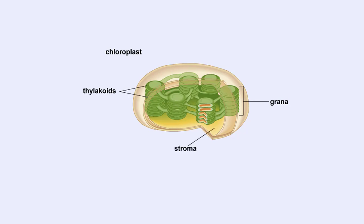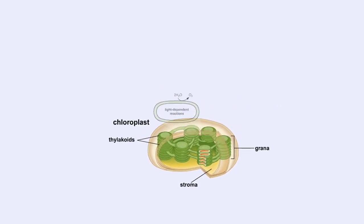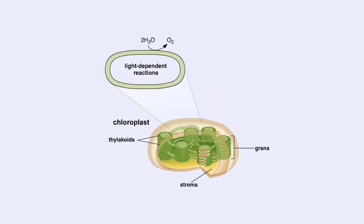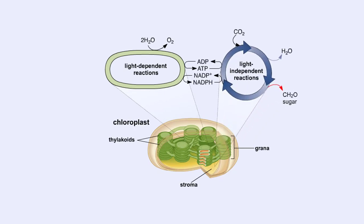All the biochemical reactions of photosynthesis take place in either the stroma or the thylakoids. These reactions are part of the two stages of photosynthesis called one, the light-dependent reactions, and two, the light-independent reactions.